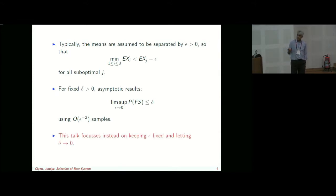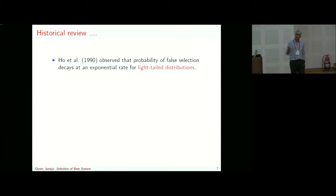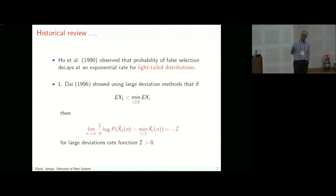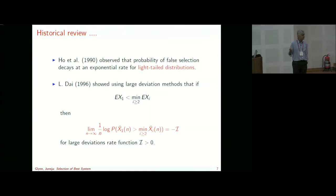In this talk we instead keep epsilon fixed and let delta go to zero — that's the flavor of our large deviation analysis. We want the probability of incorrect selection to become tiny. Historically, Ho et al. in 1990 observed experimentally that the probability of false selection decays at an exponential rate for light-tailed distributions. Dai in 1996 showed using large deviation methods that even if samples have weak dependence, if X_1 is the best design, the probability of false selection satisfies a large deviation principle with rate function I.